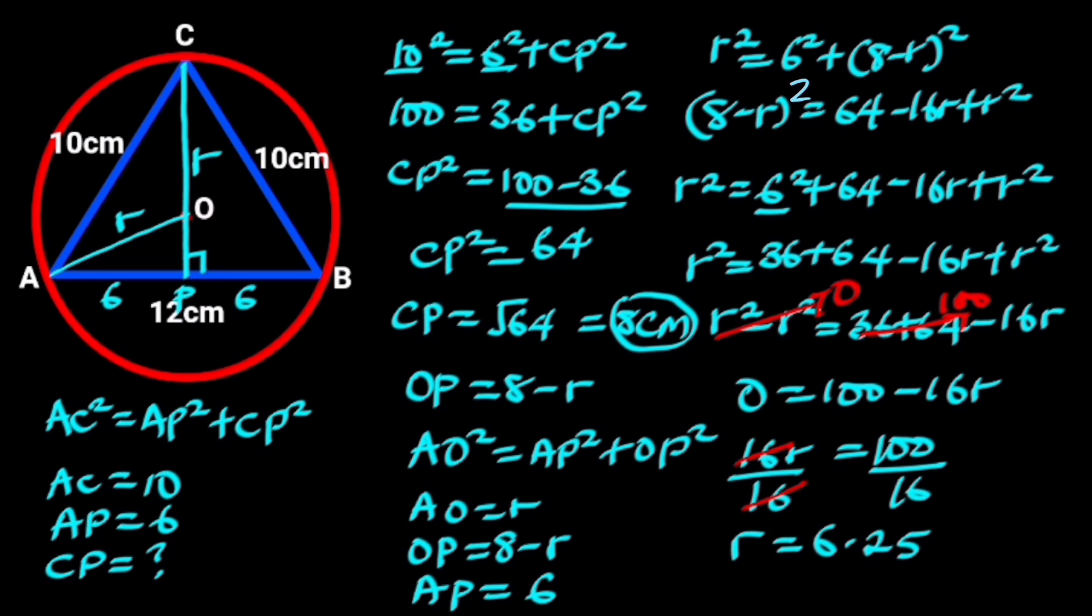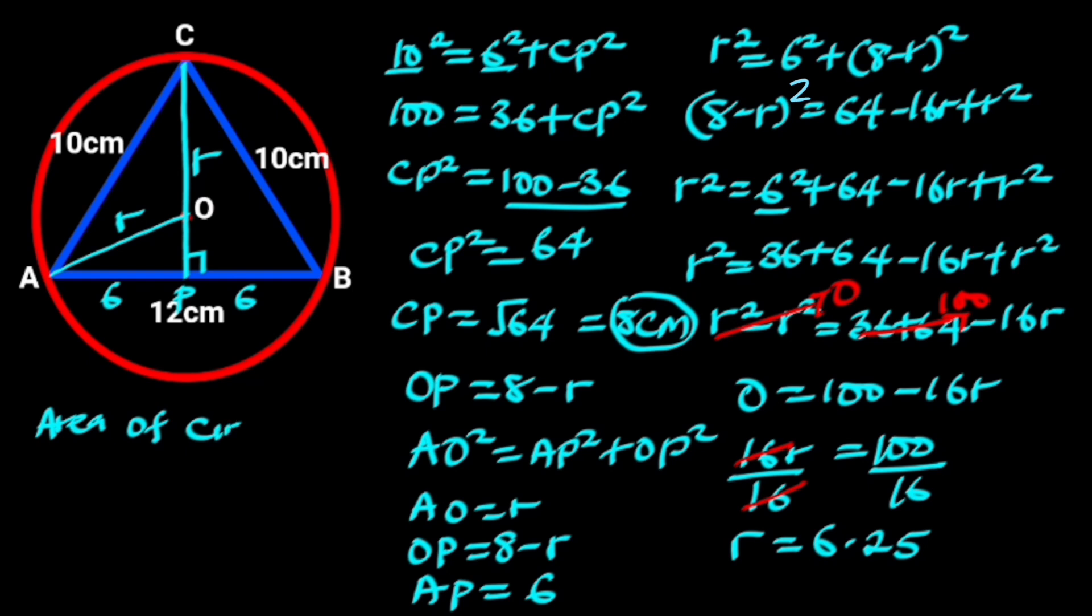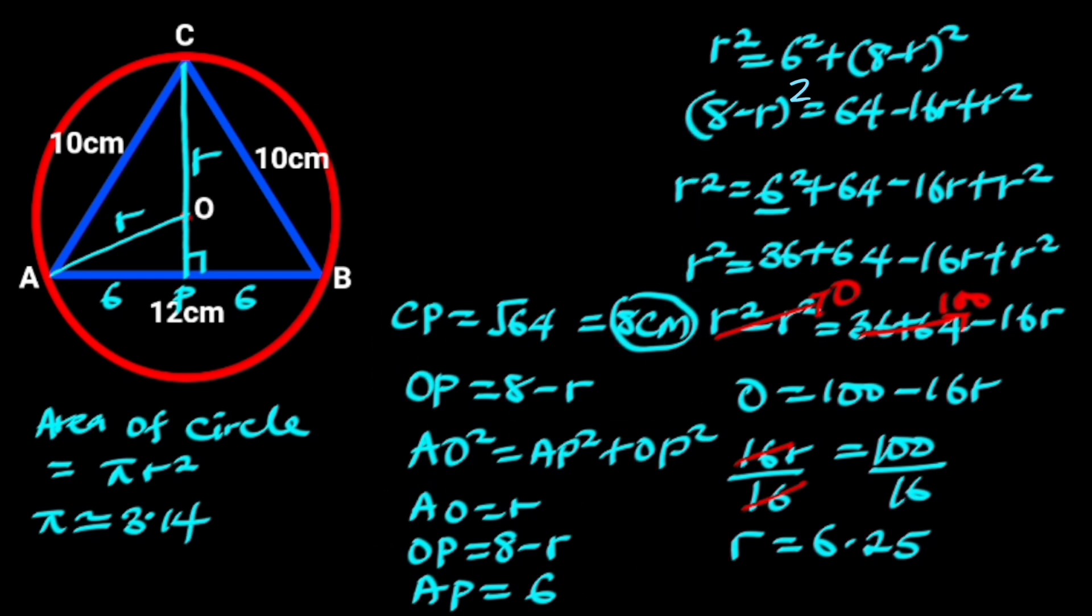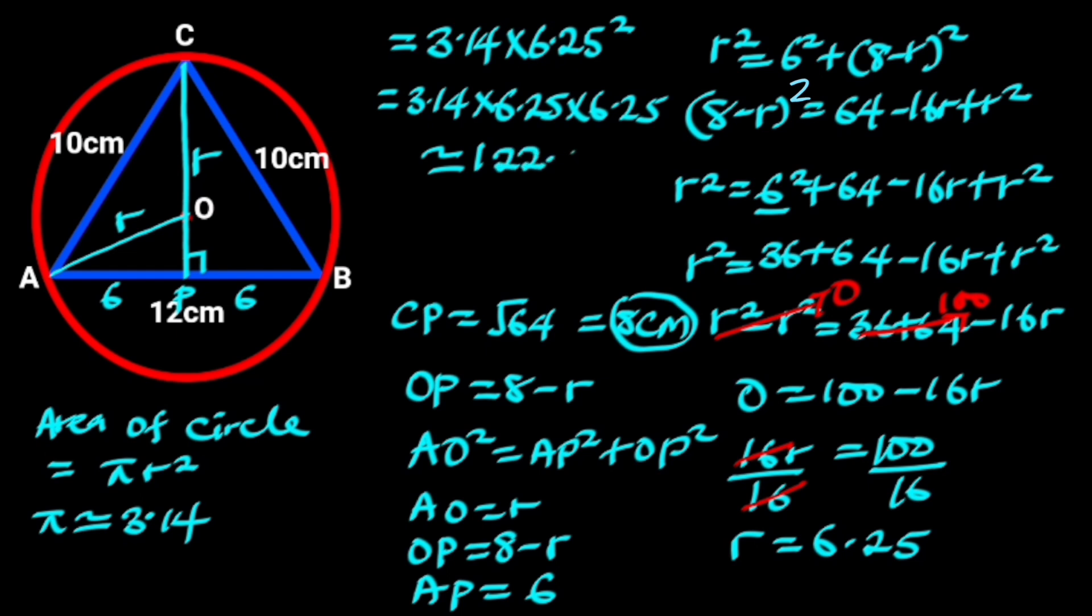Now we have known the radius of the circle, let's go ahead and find the area. Recall that area of circle is pi times R square, where pi is approximately 3.14. Substituting the value of radius in this formula will give us area of circle equals 3.14 times 6.25 square, which is the same as 3.14 times 6.25 times 6.25, which is approximately 122.66 centimeters square. Hence, the area of the circle.